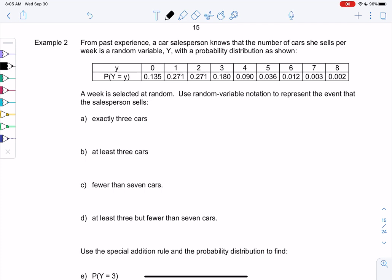So y is my variable. That's the number of cars. And remember, p is probability. So the probability has already been calculated here. It's not frequency. So the chance of selling zero cars is 0.135, or 13.5%. So let's practice that random variable notation.